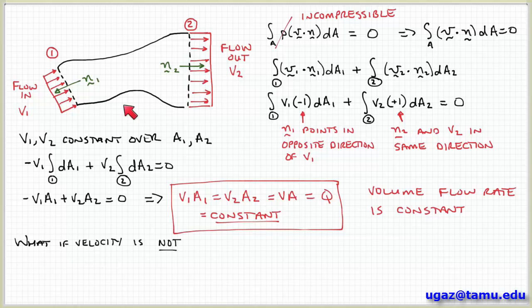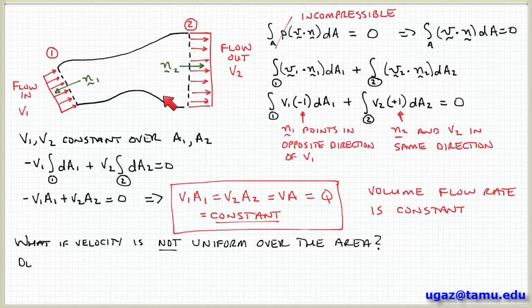So an incompressible flow through a pipe, which remember we said can be assumed generally for most liquids, the volume flow rate is constant.